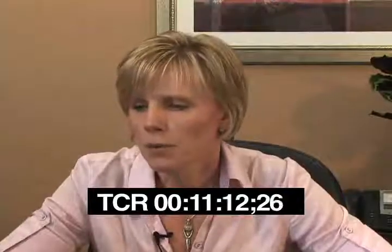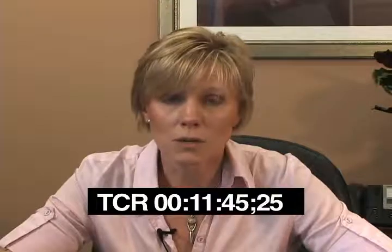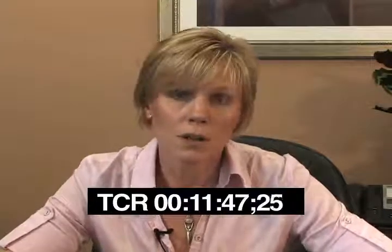The final area is the upper brain, also called the neocortex. The major function of this part of the brain is thought, or cognition. This is the creative part of our brain — it uses language, allows for music appreciation and creation, complex analysis of facts and perceptions, and logical and abstract thought. It also allows us to anticipate and plan for the future. This is truly where our intelligence is located, and it is by far the largest part of our brain, occupying five-sixths of the brain itself.